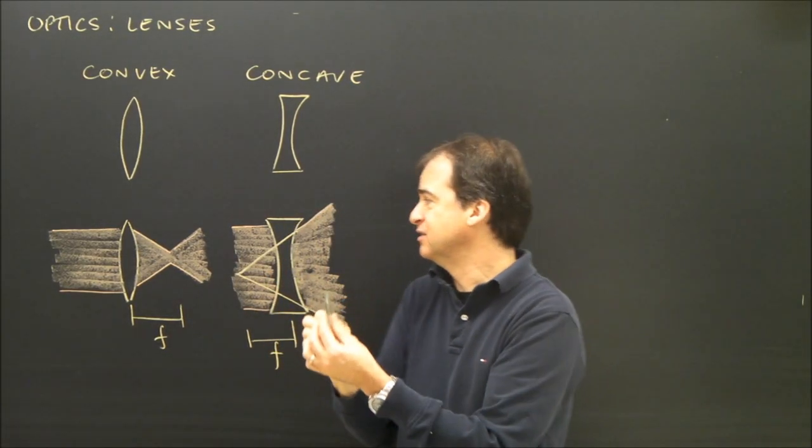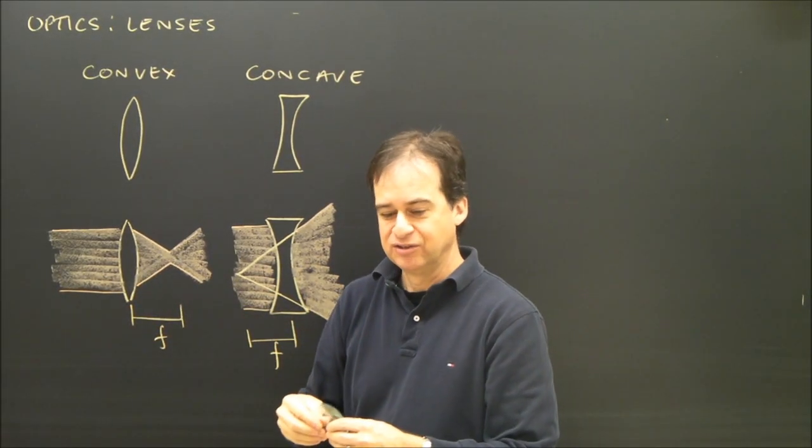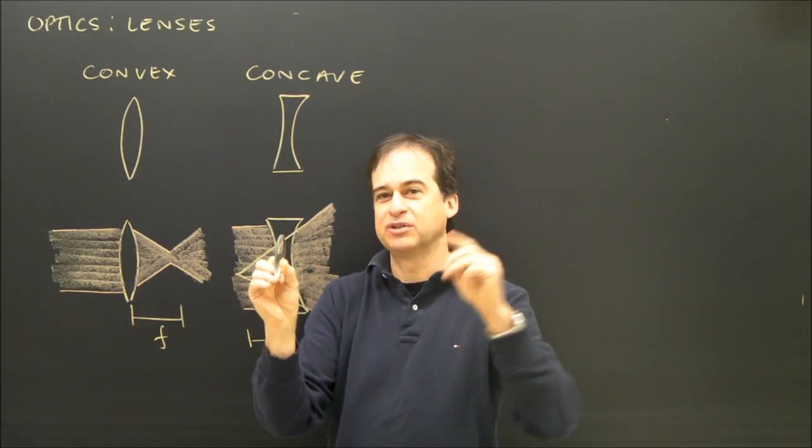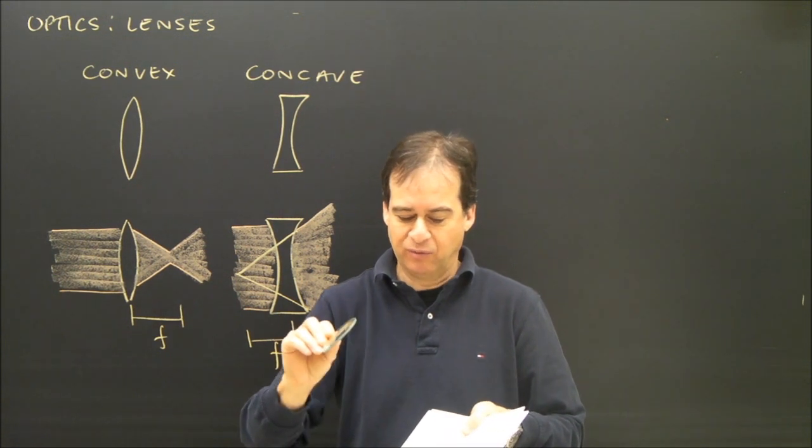And the thing about this type of lens is, if the object is past the focal length. So the lens, this lens, focal length may be about that big. If I put something beyond that, like that light, it will create a real image.